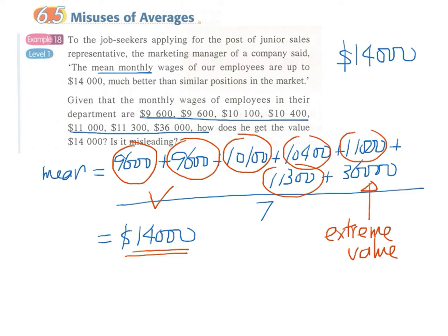So with extreme values, the mean is not that effective in representing the data. Usually in this case, we use the median.